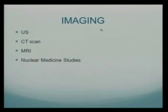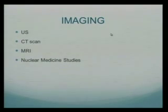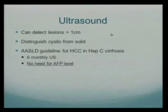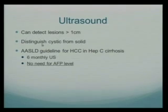Once you have an incidental mass based on a non-contrast CT or an inadequately timed contrast CT with concern for a liver lesion, and you've reviewed the medical and medication history, the next step would be imaging. The first step for liver lesions is usually ultrasound. Ultrasound is about 80 to 85% sensitive to pick up liver lesions greater than one centimeter, though smaller lesions are not as well detected. Most commonly, ultrasound will tell you whether a lesion is cystic versus solid.